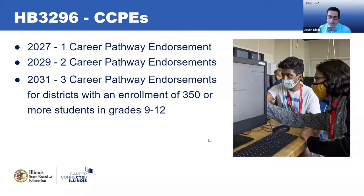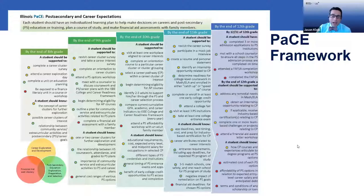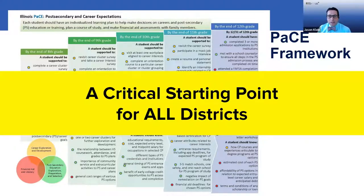Districts have to offer two career pathway endorsements in two different career pathways by 2029, and most districts in the state will have to offer three by 2031. Districts that are not required to go beyond two are those with an enrollment of fewer than 350 students in grades nine through twelve. So if you are in a school district with a small high school, you may be exempt from offering that third endorsement by 2031 — though that doesn't mean you can't offer it.